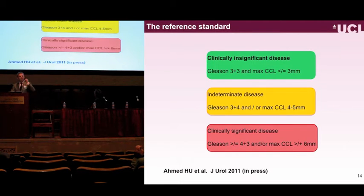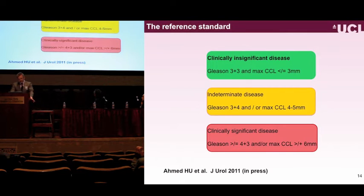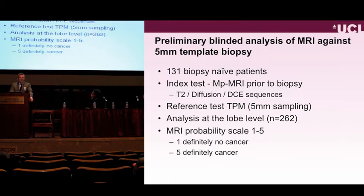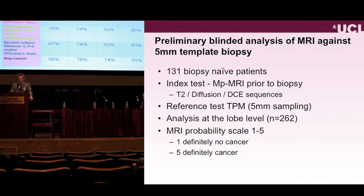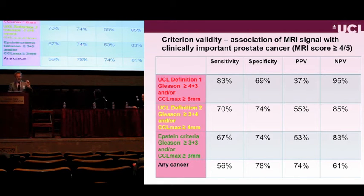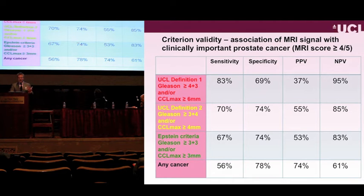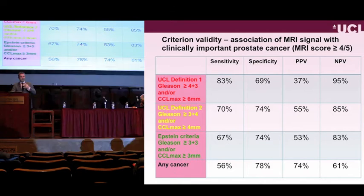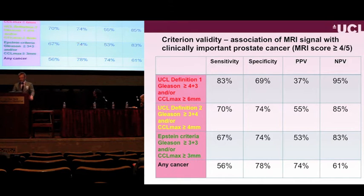We've done similar work, using five-millimeter template sampling rather than radical prostatectomy as our reference standard—a test applicable to all men at risk. We stratified 131 biopsy-naive patients into three groups: two clinically important definitions and one clinically unimportant definition of disease. MRI was applied independently of biopsy knowledge, and all underwent template sampling. We see very similar measures of performance: negative predictive value of 95%, high sensitivity and specificity. Our positive predictive value was somewhat lower because needles were deployed completely independently of MRI knowledge.